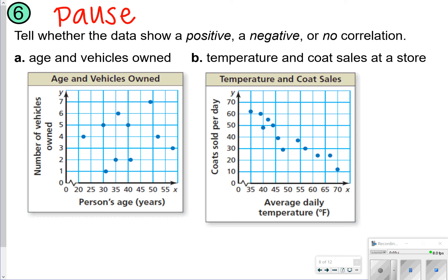So in letter a, it talks about the age and vehicles owned, and notice that none of the points really show a specific pattern. So we're going to say this is no correlation. But for letter b, the temperature and coat sales at a store, the lower the temperature, the higher the coats were sold. So that would actually be a negative correlation, because the graph is going down as we're seeing it.